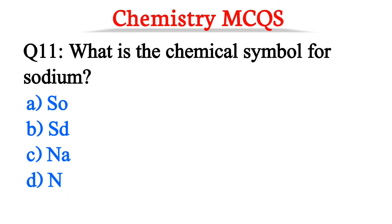Question number 11. What is the chemical symbol for sodium? The correct option is option C, Na.